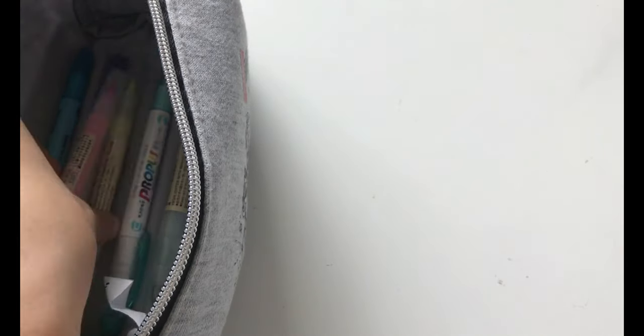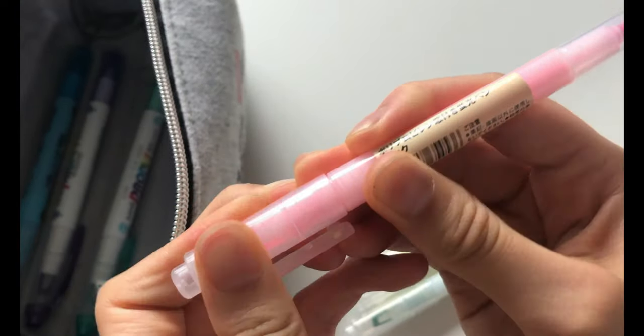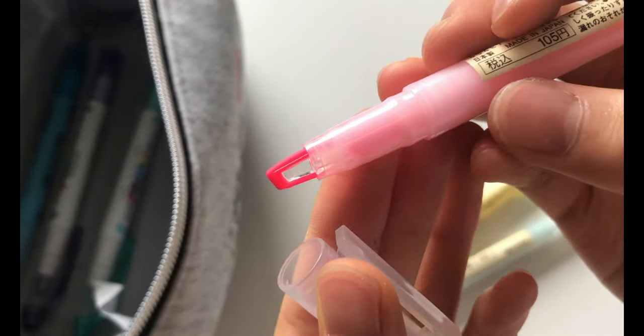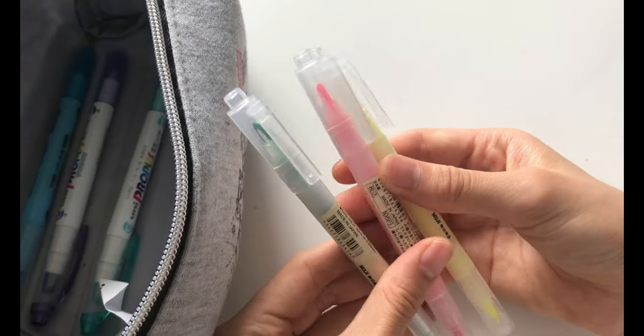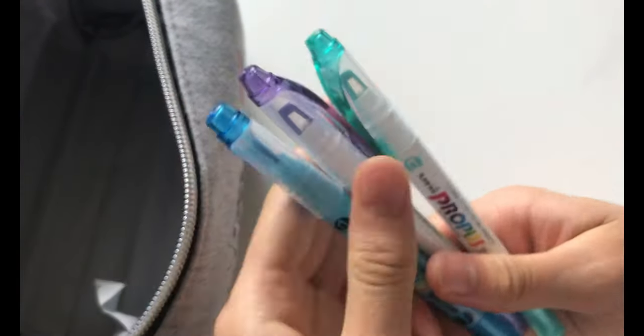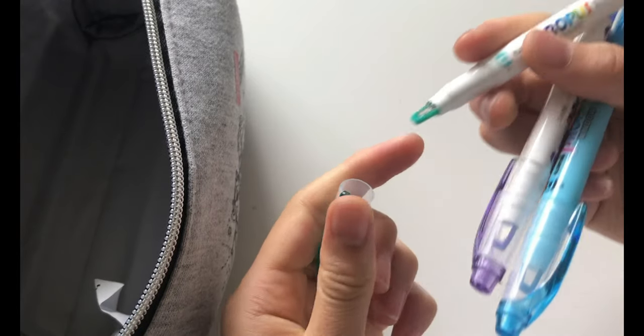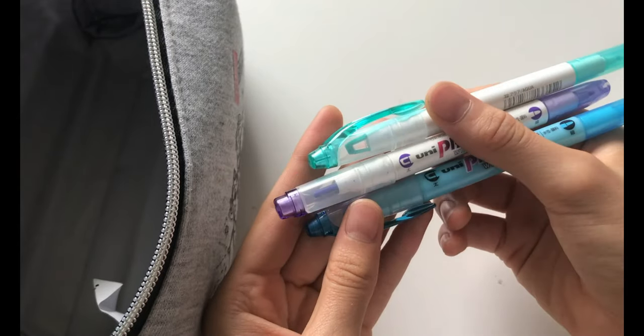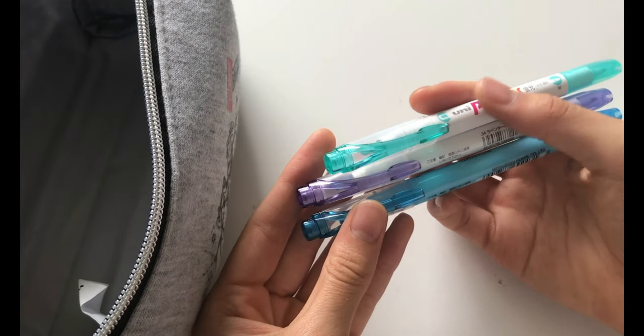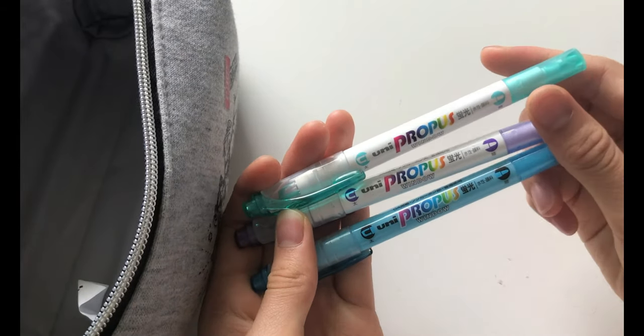The next three items are the window highlighters in the colours yellow, pink and green. So I don't use this on my notes, but I use them to highlight important information. The next three items are the uni propice window highlighters. So these are the smoothest highlighters I've ever used, but the only reason why I don't use these for my notes is because they have limited colours. So I only bought the teal, blue and purple in the soft colours.